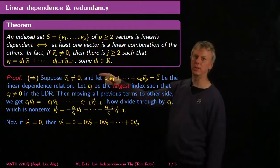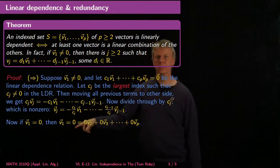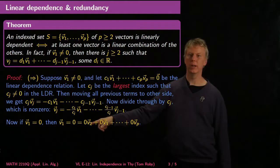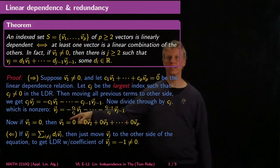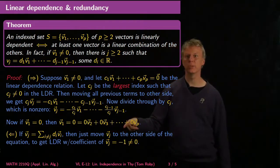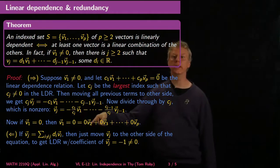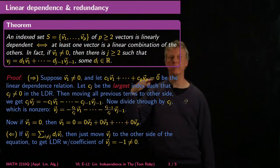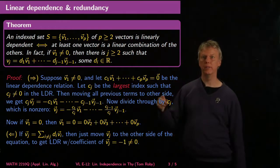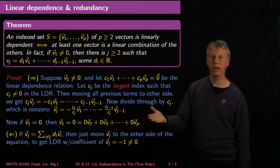I made the assumption that v1 was not equal to zero. What if v1 equals zero? Well, if v1 equals zero, then v1 can be written as the zero linear combination of all the other vectors, which is zero. Moving that over to the other side gives a linear dependence relation. So I can always write at least one vector as a linear combination of the others: if v1 ≠ 0, it can be written in terms of the previous ones; if v1 = 0, it's just the zero linear combination of the others.